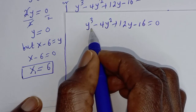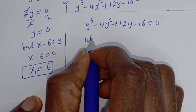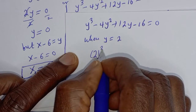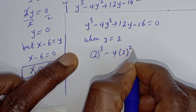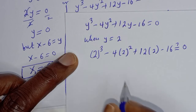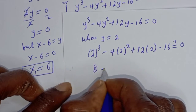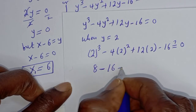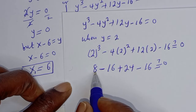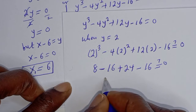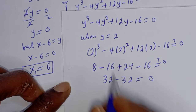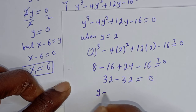We test values. When y equals 2: 2³ minus 4 times 2² plus 12 times 2 minus 16 equals 8 minus 16 plus 24 minus 16 equals 0. Therefore (y minus 2) is a factor.